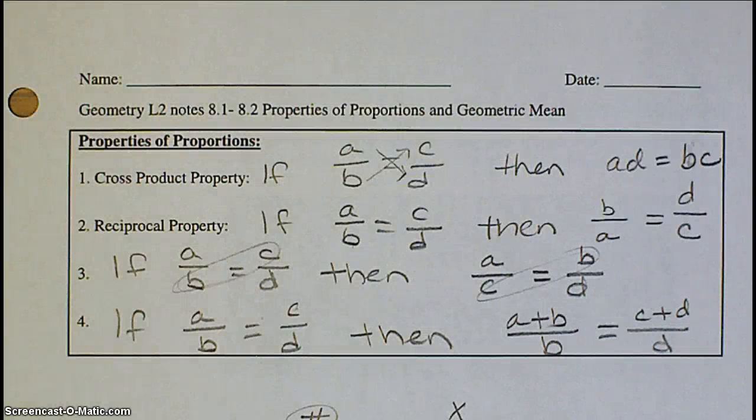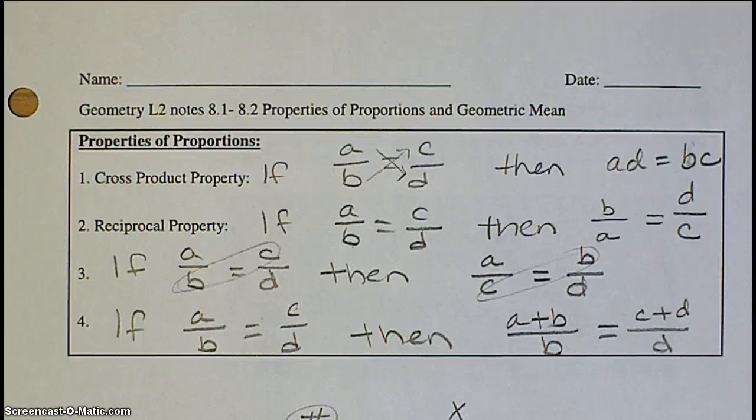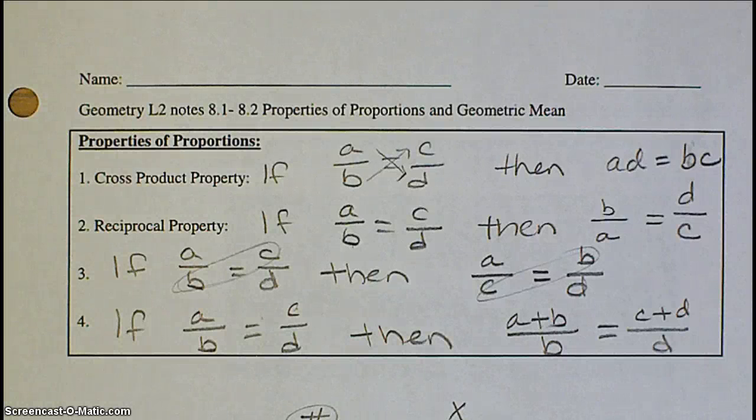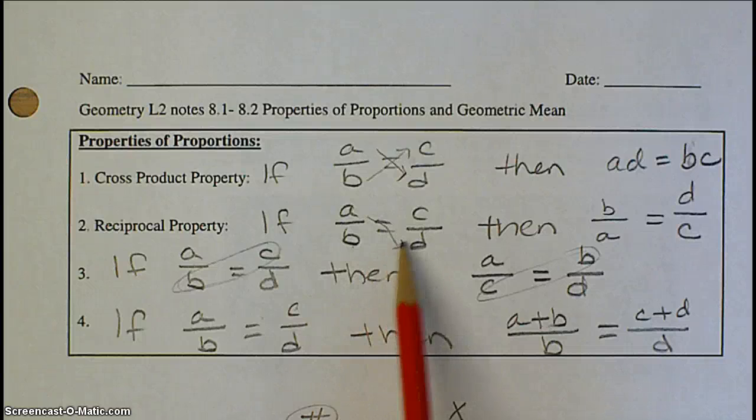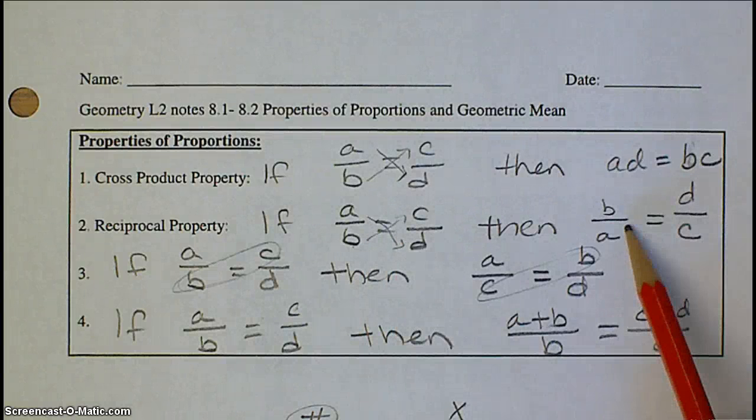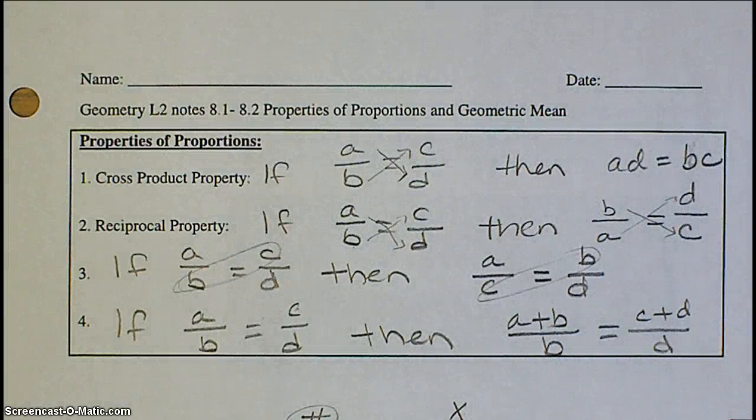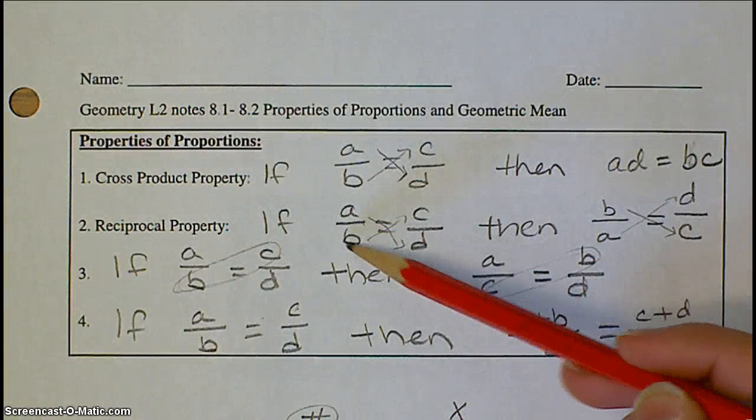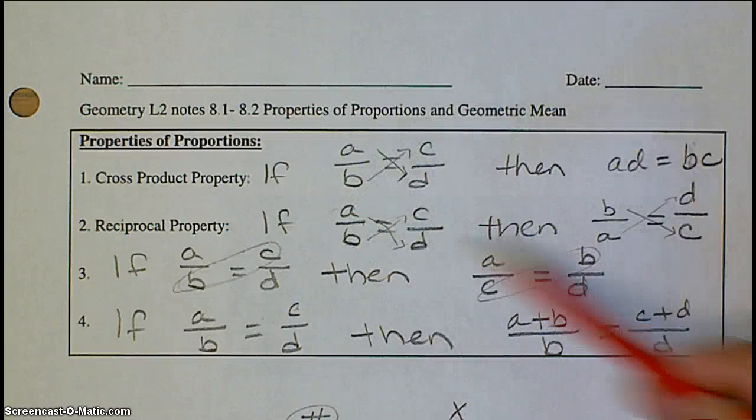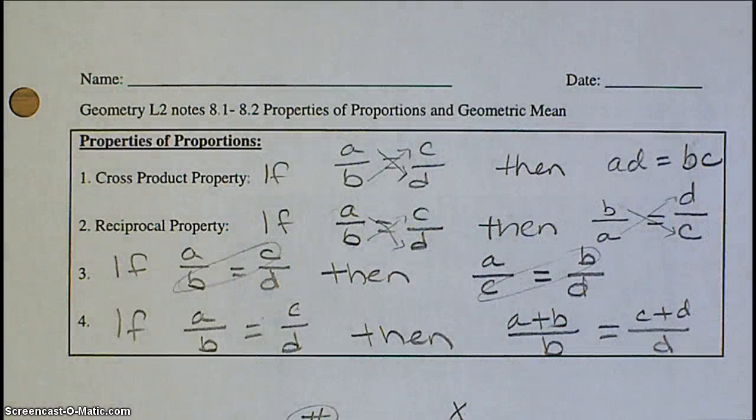Another thing that we talked about in this lesson was some special properties of proportions. The first one, the cross product property, we've been working with for a few days now. And all that says is if you have a proportion and you do the cross products, they will be equal to one another. The reciprocal property, that one you can kind of see will also work because of the cross product property. If I do my cross products in this proportion, and I do my cross products with the reciprocals, the cross product will remain the same. So this property just says if you take a proportion and you flip-flop each ratio, that proportion will also be true.